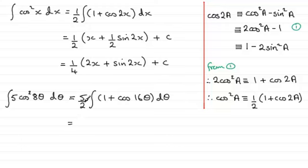So we've got the constant out the front 5 over 2. And the integral of 1 with respect to theta is theta. And the integral of cos 16 theta with respect to theta is going to be 1 16th of the sine of 16 theta. Close the bracket there and put the constant of integration which I'll call plus c again.